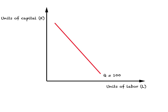Another shape of an isoquant is a straight line. That simply means you have to give up a fixed quantity of capital when you decide to increase labor by one unit. So whether you are at one end or the other, the amount of capital you give up will be the same all across this isoquant, because it has a constant slope — that is, MRTSLK is a fixed number.